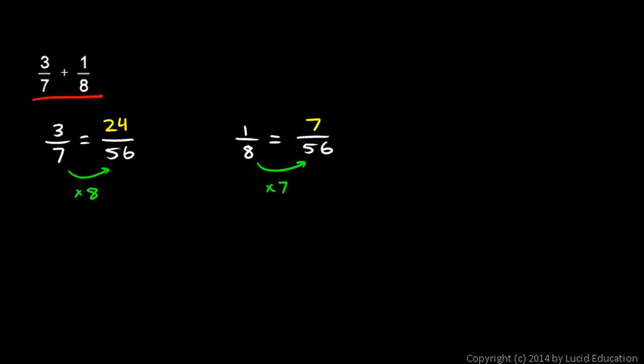3 7ths plus 1 8th will be the same as 24 over 56 plus 7 over 56. And that we can do pretty easily. 24 over 56 plus 7 over 56, and we can just combine the 24 and the 7 because we have the same denominator, and 24 plus 7 is 31. So we get 31 over 56, and that's our answer.